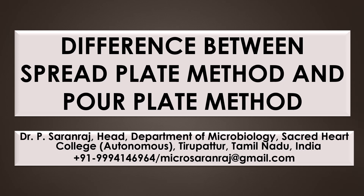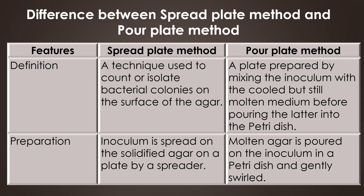Dear viewers, greetings. In this video we are going to see the difference between the spread plate method and pour plate method. A technique used to count or isolate the bacterial colonies on the surface of the agar is called the spread plate method. A plate prepared by mixing the inoculum with the cooled but still molten medium before pouring it into the petri dish is called the pour plate method.